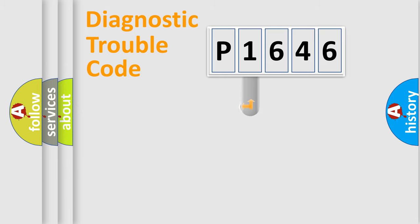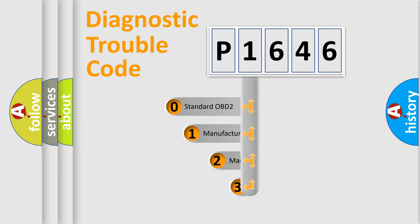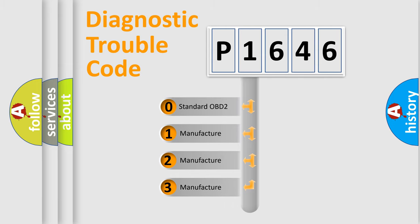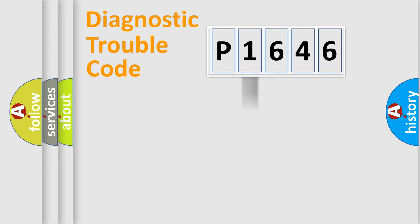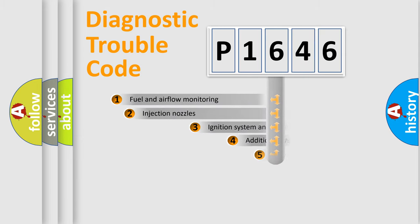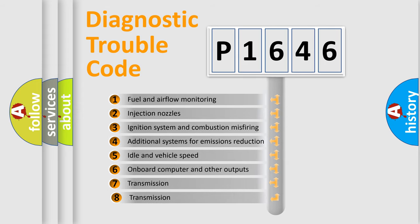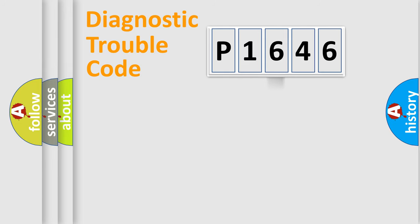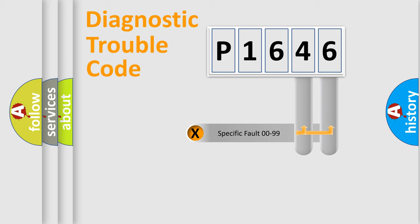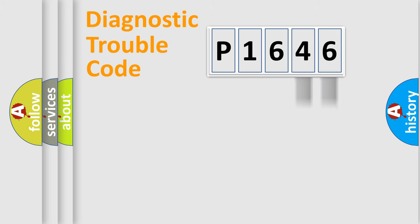This distribution is defined in the first character of the code. If the second character is expressed as zero, it is a standardized error. In the case of numbers 1, 2, or 3, it is a more manufacturer-specific expression of a car-specific error. The third character specifies a subset of errors. The distribution shown is valid only for the standardized DTC code, and only the last two characters define the specific fault of the group.